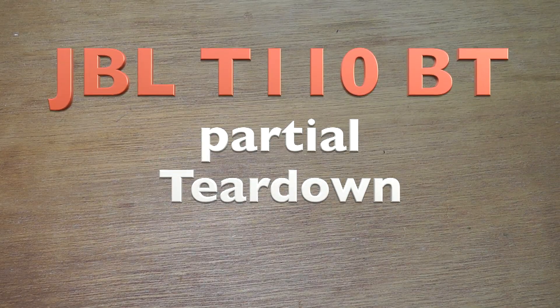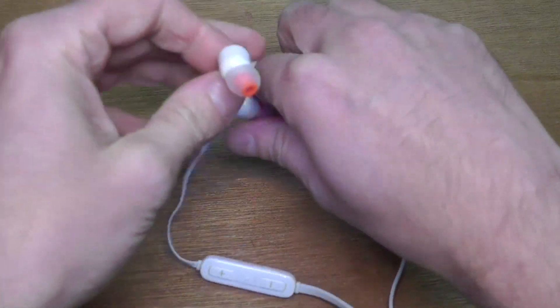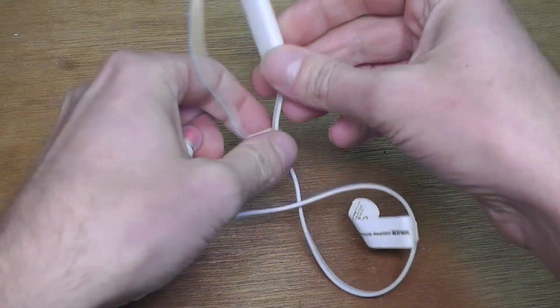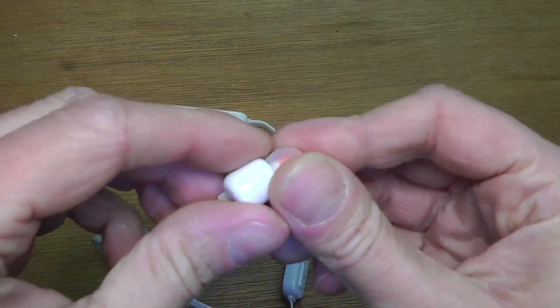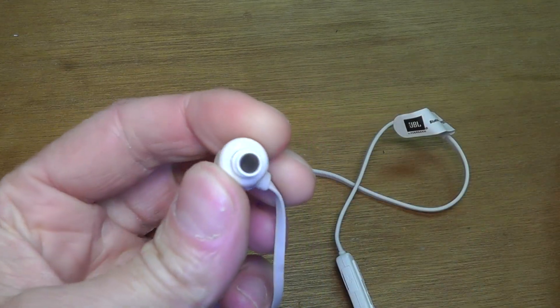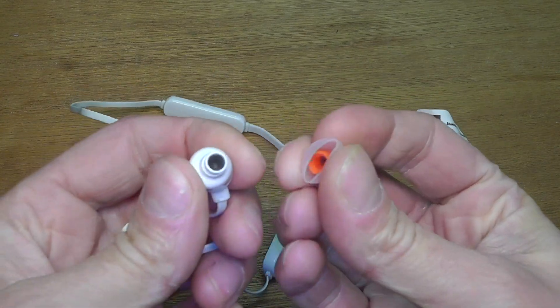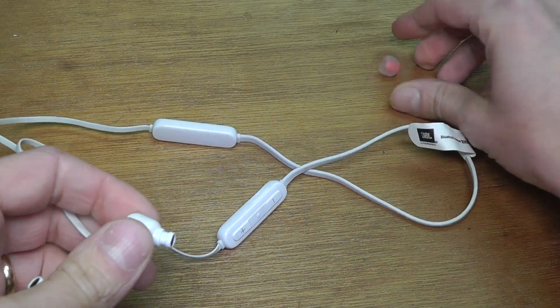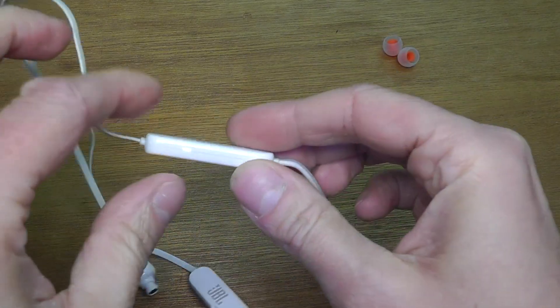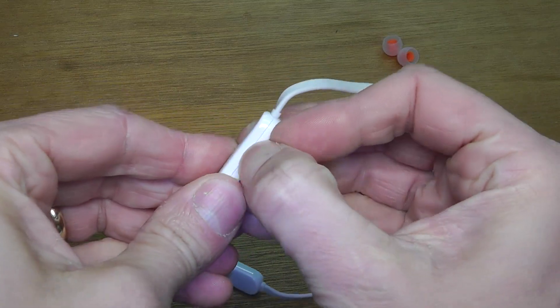Here's the JBL T110 Bluetooth headphones partial teardown. Yeah, only a partial teardown - I'm not going to take apart the earpieces. I don't know how to really do it without destroying those completely, so I'm not going to take those apart.